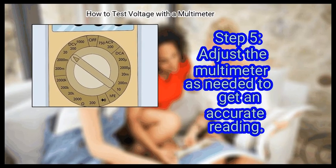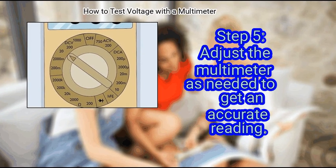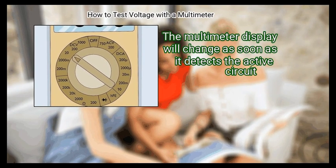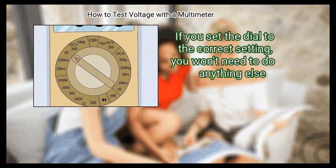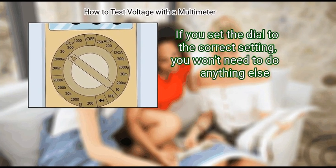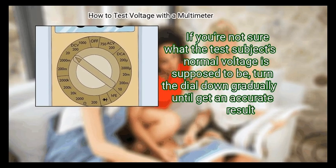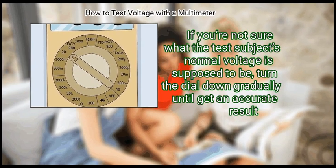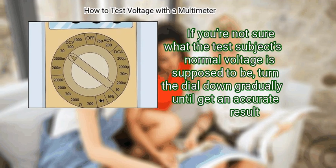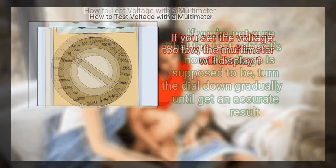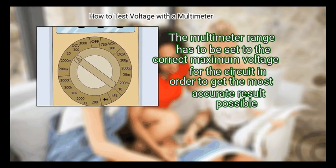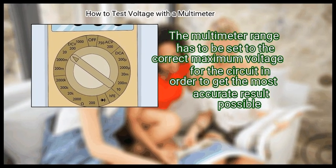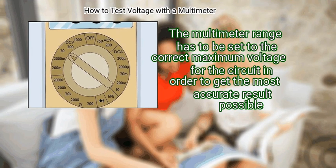Step 5: Adjust the multimeter as needed to get an accurate reading. The multimeter display will change as soon as it detects the active circuit. If you set the dial to the correct setting, you won't need to do anything else. If you're not sure what the test subject's normal voltage is supposed to be, turn the dial down gradually until you get an accurate result. If you set the voltage too low, the multimeter will display one.